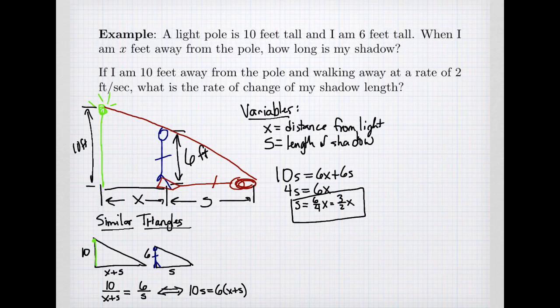The second question says if I am 10 feet away from the pole, that means x equals 10, and I am walking away at a rate of 2 feet per second. That's a rate of change. My distance is changing, so dx/dt is moving away. Moving away makes x bigger, so I have a positive rate of change of 2. What is the rate of change of my shadow length? What is ds/dt?